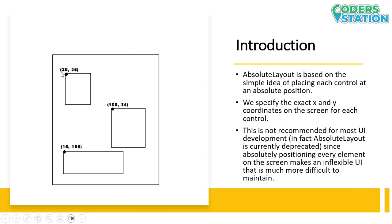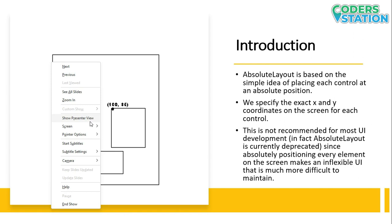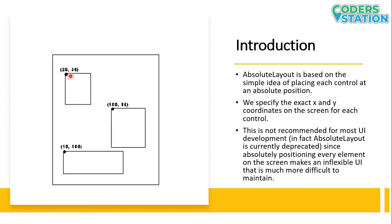As you can see on our screen, for example, if you want to place a particular view like a TextView or a button at a particular position, what we need to do is exactly specify the X and Y coordinates for that particular location. Our view will be placed from its top-left corner. For the next view, we are specifying X as 100 and Y as 85, and the next view will start from this position and be placed over here.